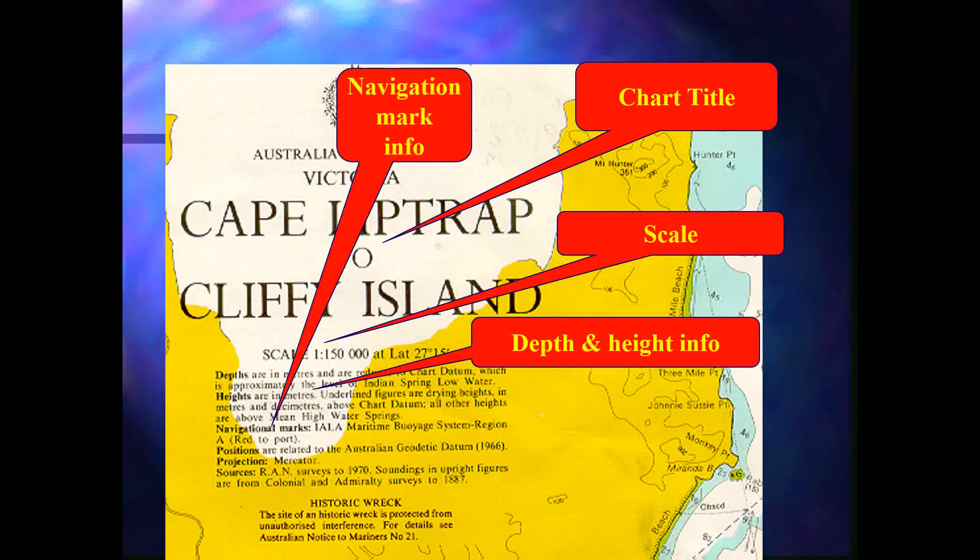We also have information about navigational marks. This chart covers the IALA — International Association of Lighthouse Authorities — maritime buoyage system Region A, where red is denoted to the port side. There are two buoyage regions, A and B: in one, red is to port, and in the other, red is to starboard. This chart covers red to port, so it is under System A.